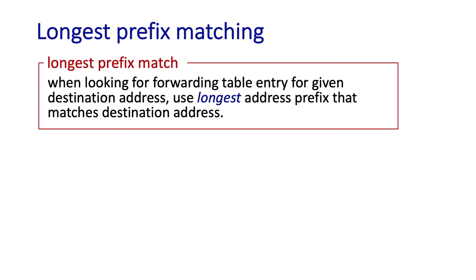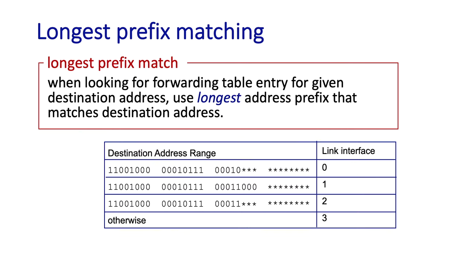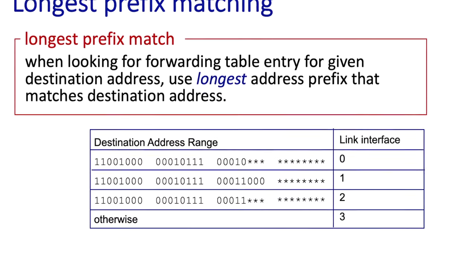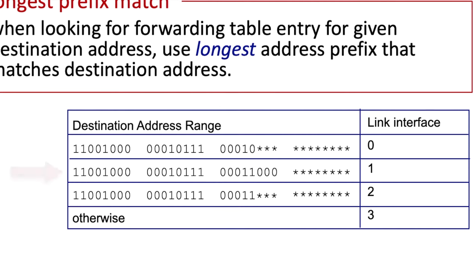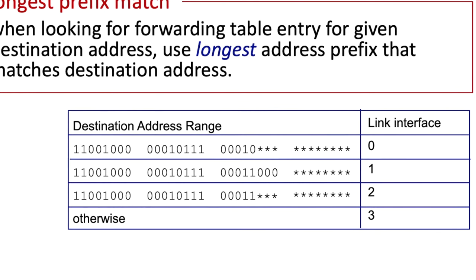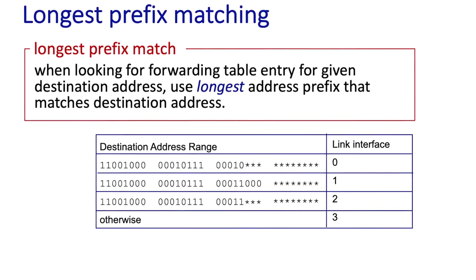Longest prefix matching is relatively simple. Instead of using explicit ranges, we work with address prefixes. Here we have a table with four entries. The first prefix has 21 bits, the second prefix has 24 bits — a longer prefix — and the third prefix also has 21 bits. The stars on the right represent wildcards or don't-care bits; they're not part of the prefix. Address ranges and prefixes are really the same things, but it's a lot easier to work with address prefixes rather than address ranges.